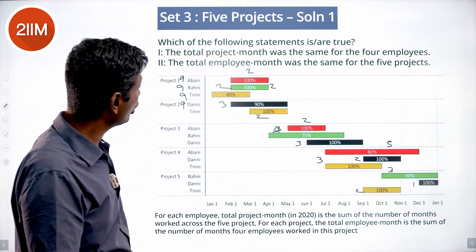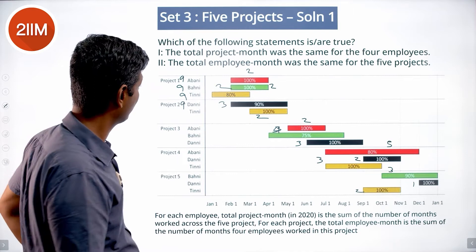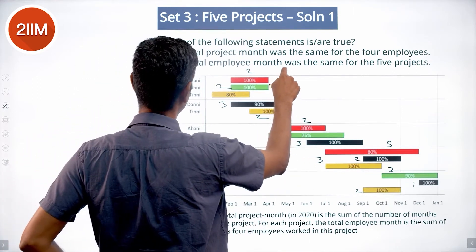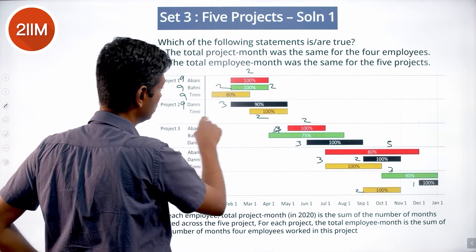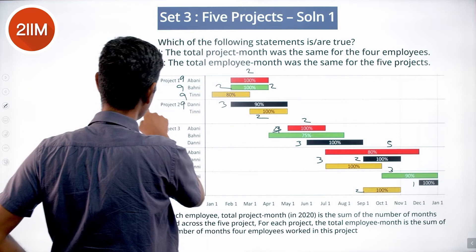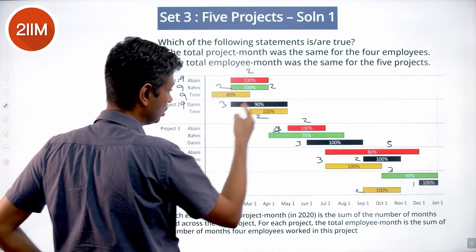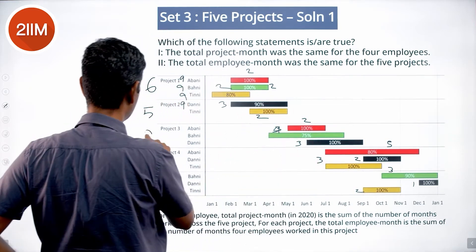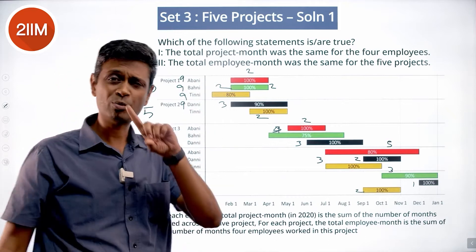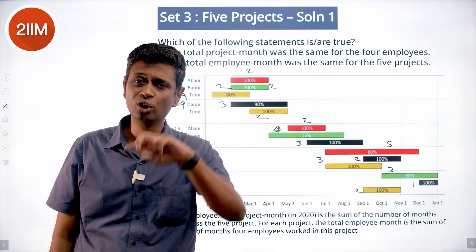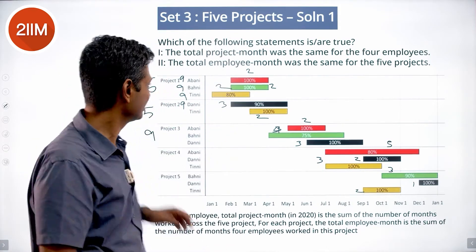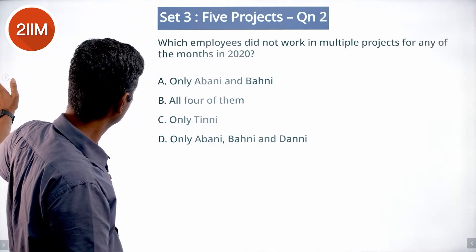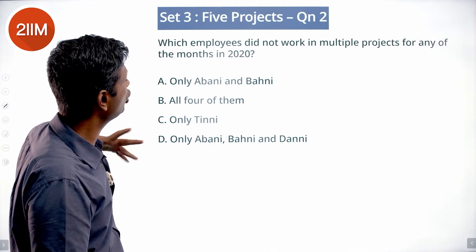Now checking statement two — the total employee month was the same for the five projects. Project 1: 3 plus 2 = only 5. Project 2: 2 plus 4 = 6. Project 3: 6 plus 3 = 9. That doesn't work. Statement 1 holds good; statement 2 doesn't hold good. We're through.